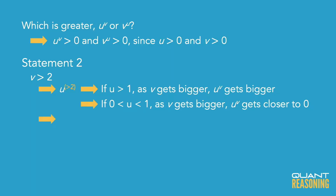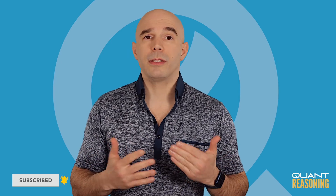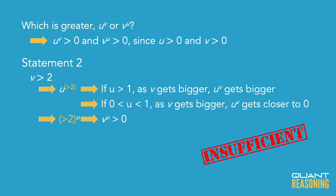What about v to the power of u? We know v is more than 2, so we have a base greater than 2 to the power of something positive. Where would that get us on the number line? Really, anywhere to the right of 0. So we don't know much about v to the power of u, and we don't know much about u to the power of v — we can't compare them. Statement 2 is also not sufficient on its own, so we can eliminate B.